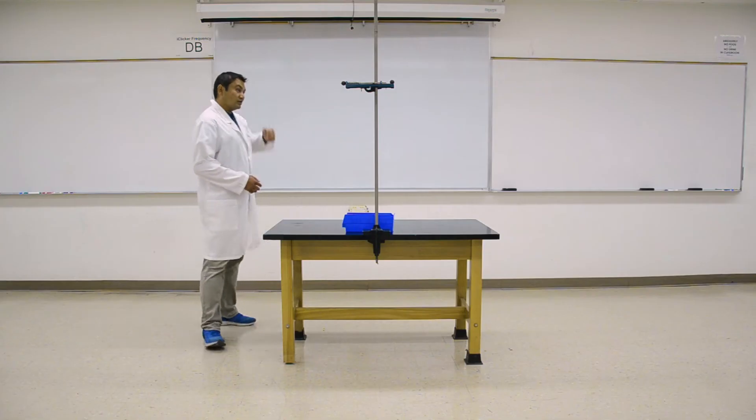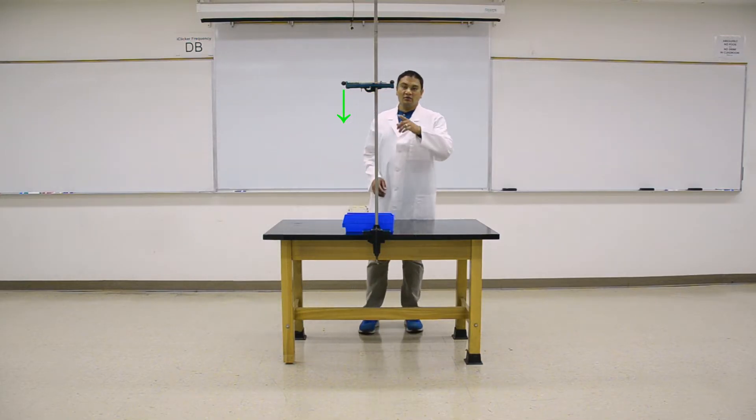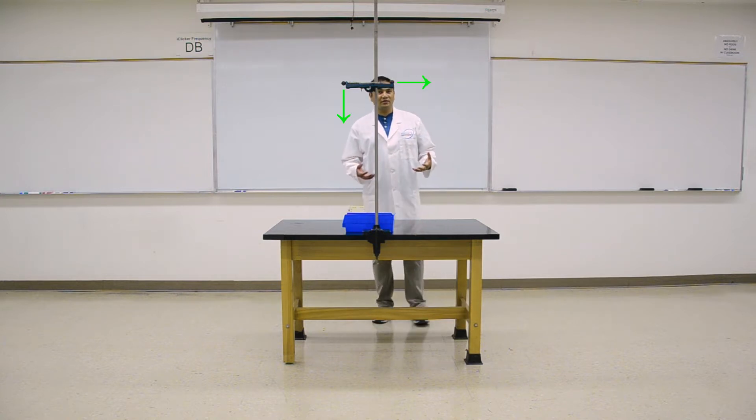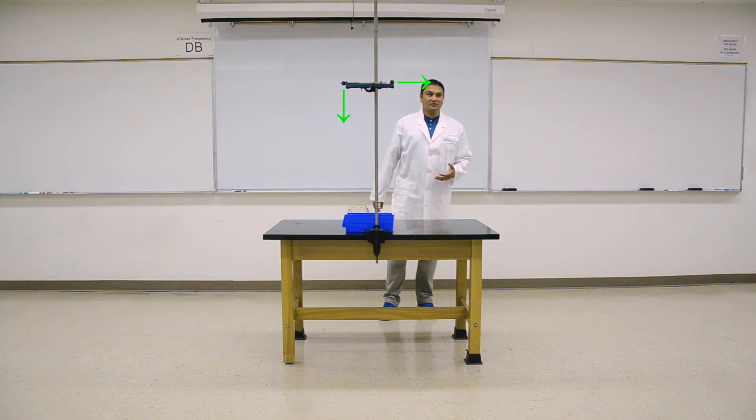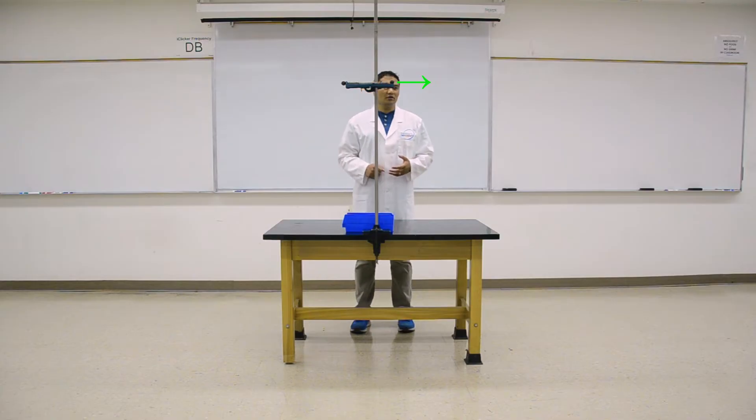One will be dropped vertically. The second one will be shot horizontally. Which one do you think will hit the bottom first? The one that drops vertically or the one that's been fired horizontally?